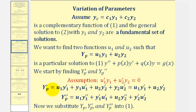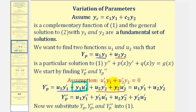To find the first derivative, we apply the product rule to each term in y_p. The derivative of the first term gives us the sum of two terms, and the derivative of the second term gives us the sum of two more terms. Now, applying our assumption, u₁' times y₁ plus u₂' times y₂ equals zero, so the first derivative of y_p simplifies to just the sum of u₁ times y₁' and u₂ times y₂'.